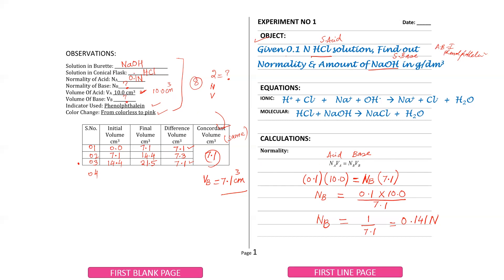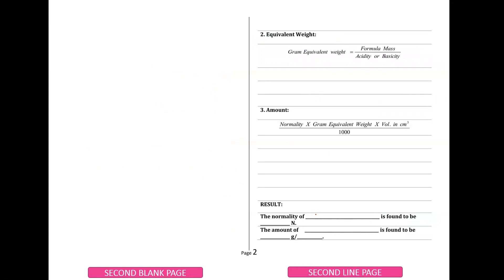You have all the data: the volume of acid is known, the normality of the acid is known, the normality of the base is unknown (NB), and the volume of base is from the concordant reading — 7.1. Putting these values into the formula and solving, the normality of the base is 0.141. Write this result — the normality of sodium hydroxide is 0.141 N.